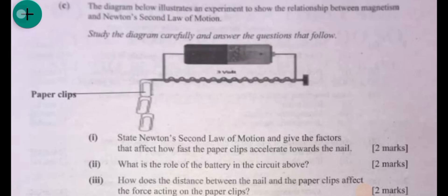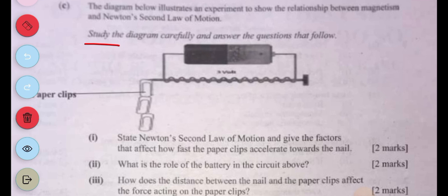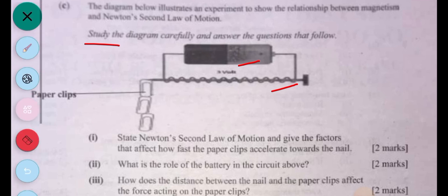The diagram below illustrates an experiment to show the relationship between magnetism and Newton's second law. Study the diagram carefully and answer the questions that follow. We have a cell or battery with a nail and wire wound around the nail, and paperclips connected to the nail.